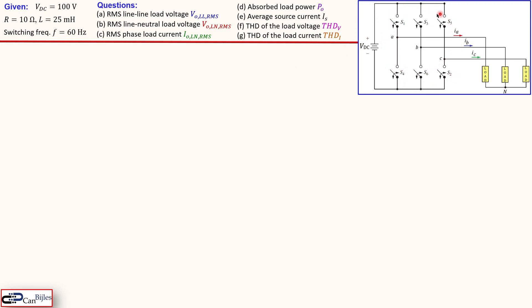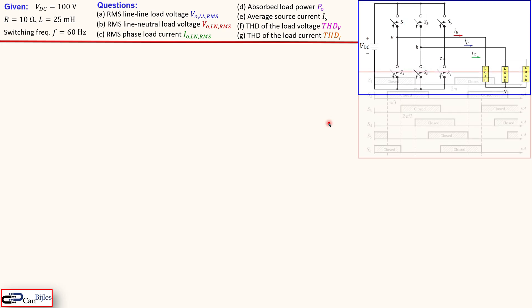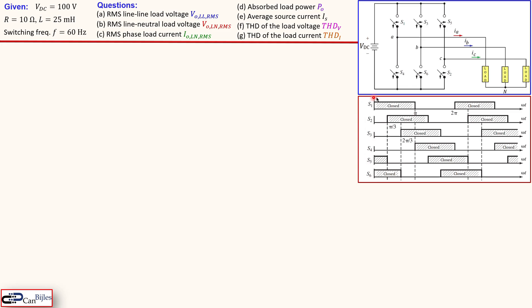In total we have six switches, similar to the square wave inverter which had four switches. We use a specific switching scheme shown here: S1 through S6 each have a specific pattern. S1 conducts from 0 to π (180 degrees), then opens. S2 is delayed by π/3, S3 by another π/3, and S4, S5, S6 are each delayed by π/3 from one another. This creates the six-step inverter.